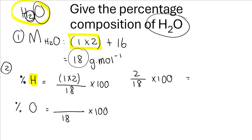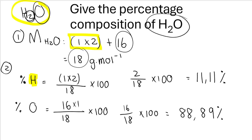Working those out — rounded to two decimal places — 11.11% of water consists of hydrogen, and 88.89% of water consists of oxygen.